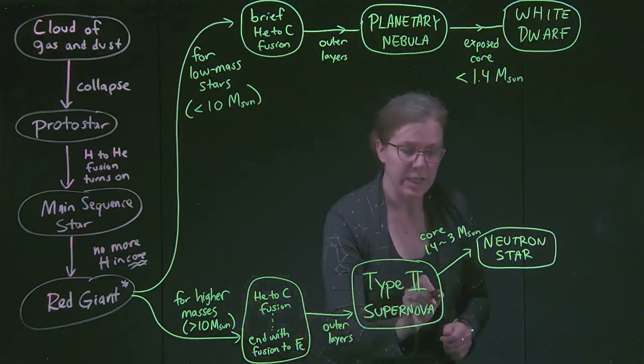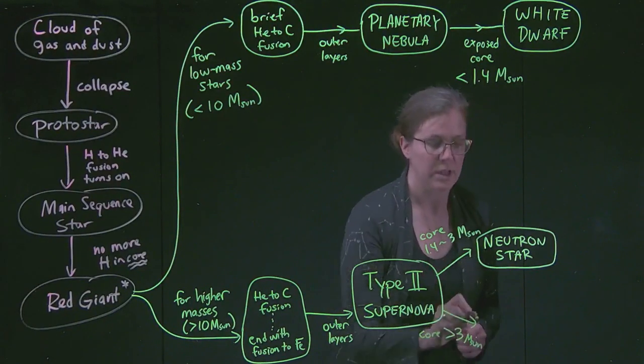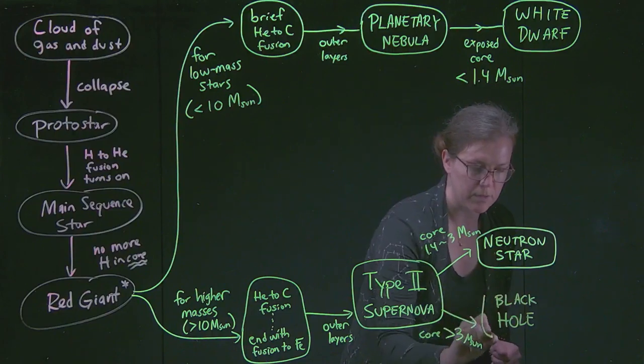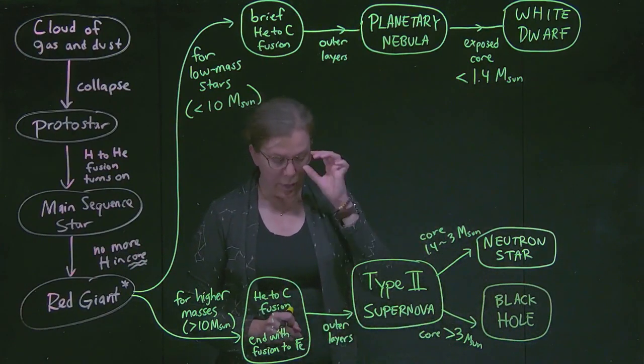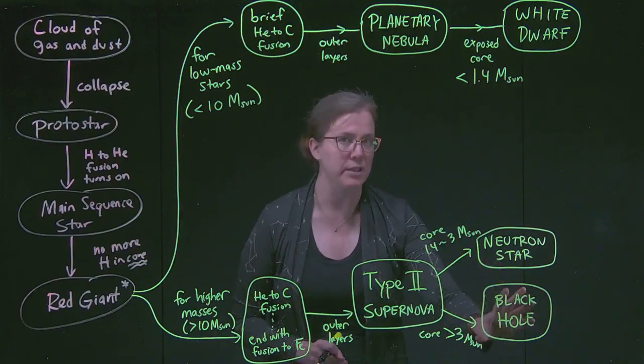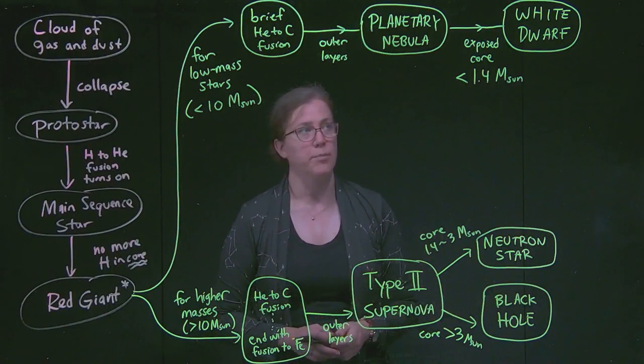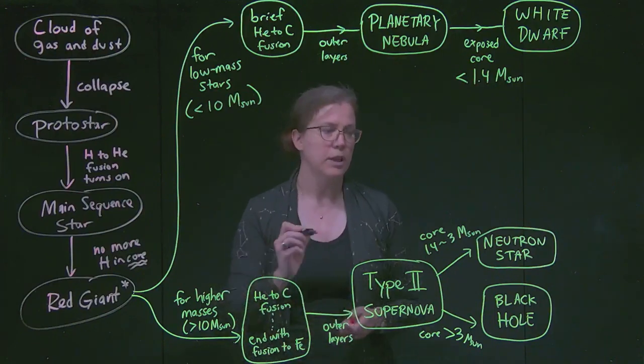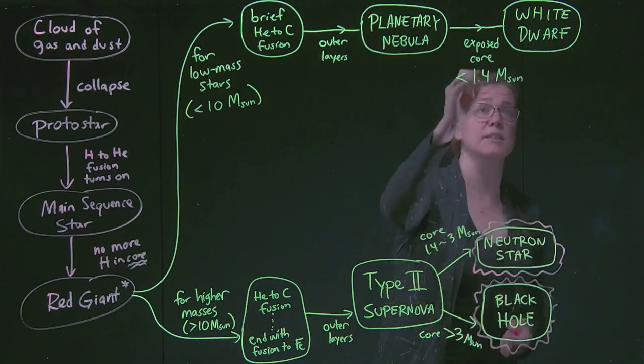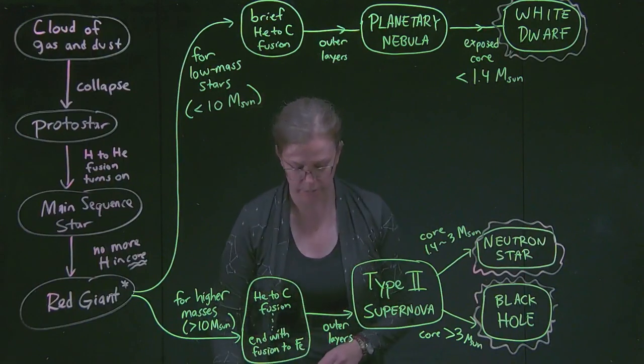And then if the core is bigger than 3 solar masses, so this is the core, is bigger than 3 solar masses, then we leave behind a black hole. Everyone's favorite mysterious astronomy thing. And it's worth recognizing that if we have a core that is about 3 solar masses, our original star was about 40 solar masses. And those are already extremely rare stars to create. And so black holes are the rarest of these 3 stellar remnants. And I'm going to kind of highlight again these 3 terms because they are the 3 end states of any given star. It's those 3 possibilities. And those are called stellar remnants.